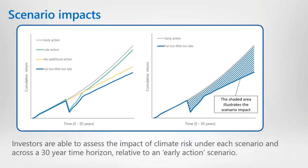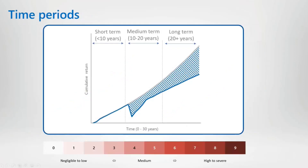Our climate scenario analysis assesses the impact of a late action, no additional action and a far too little too late scenario by projecting forward how investments may fare under each, relative to an early action scenario as illustrated on the left-hand side graph on this slide. The difference, or scenario impact — illustrated by the blue shaded area on the right-hand side graph — is used to calculate the scenario impact that feeds into our climate scenario analysis. This is done for each scenario across a 30-year time horizon. Impacts are measured across a short term (less than 10 years), medium term (10 to 20 years), and long-term time horizon (over 20 years), considering the largest impact under each time period for a given scenario.